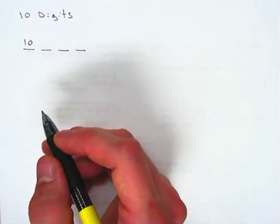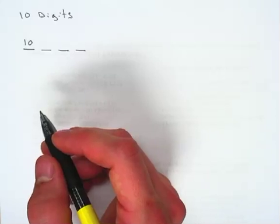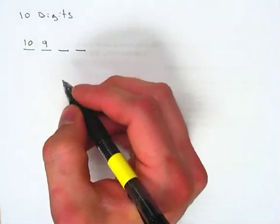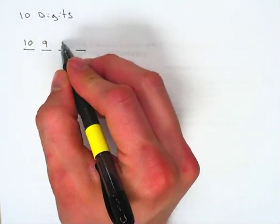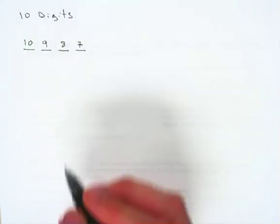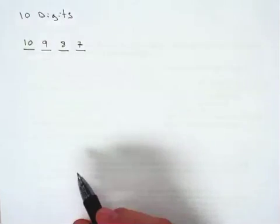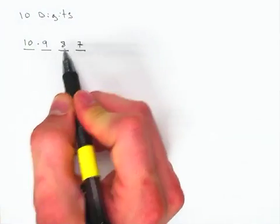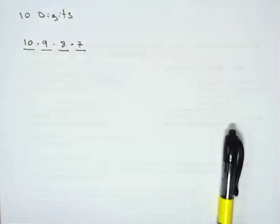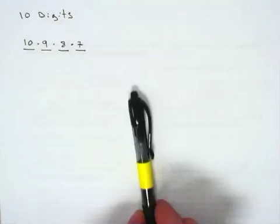Of course, since you cannot choose the same digit twice, then your next option is that you only have nine left to choose from. And then, since you've chosen two already, you only have eight left to choose from and then only seven left to choose from. And so, as we look at this, the actual number starts out by saying you have ten times nine times eight and seven and that's it. Every single time in order to figure out your permutations, that's what you set up.